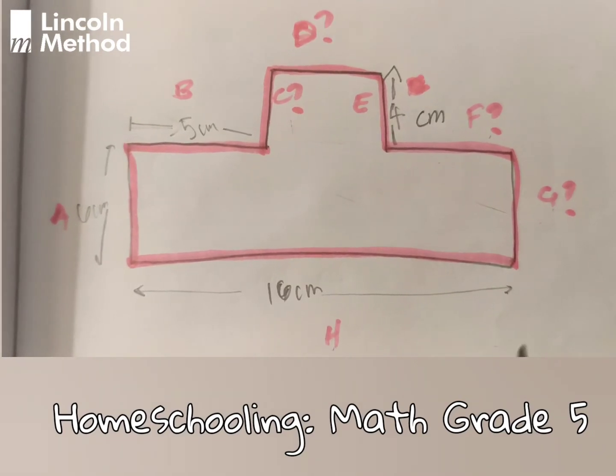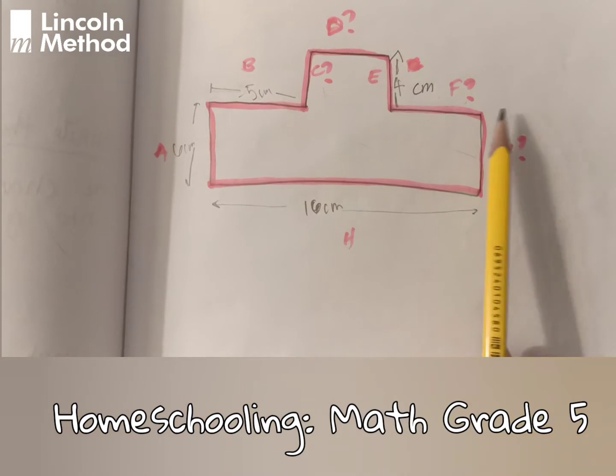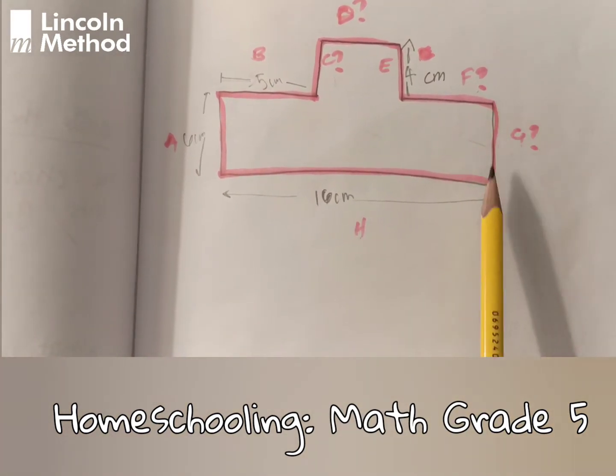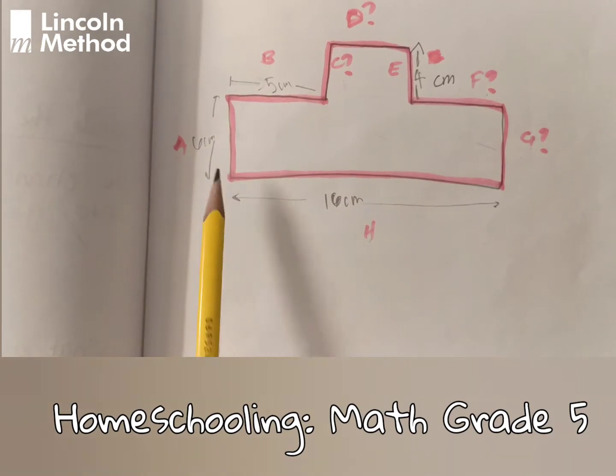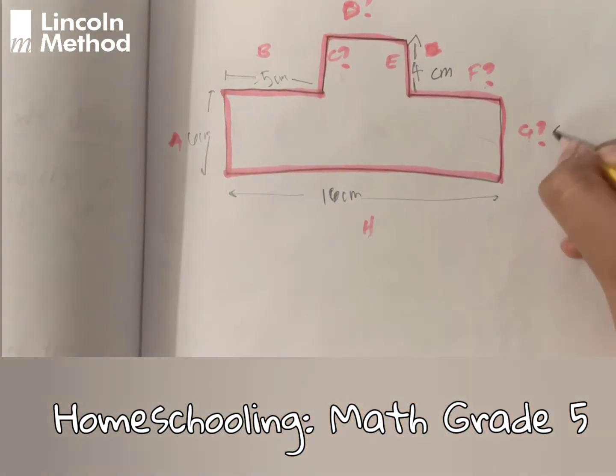Now we're going to solve G. A and G both have the same height because, as you can see over here, they're the same. So this will be 6 cm.